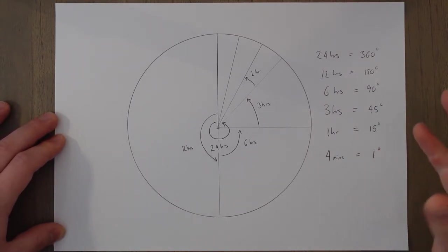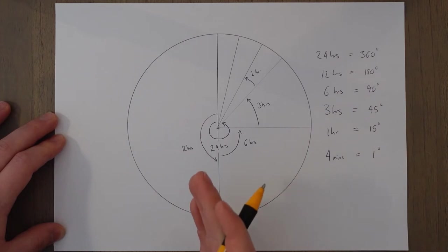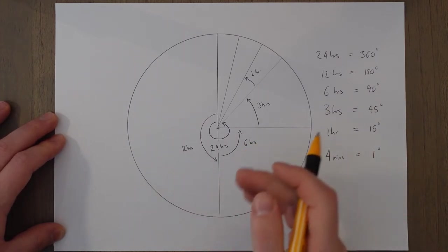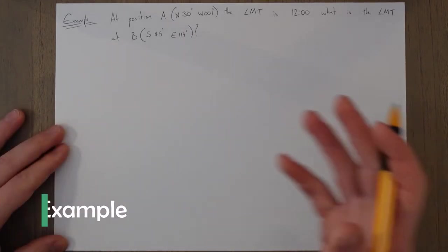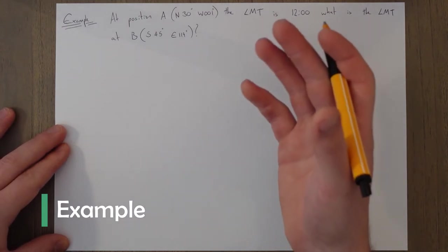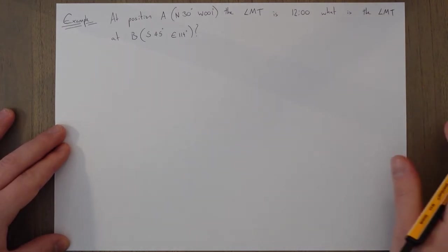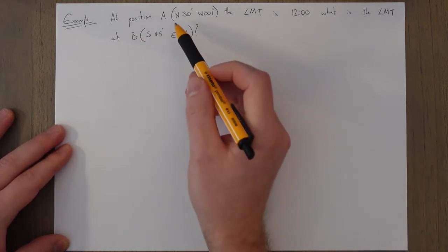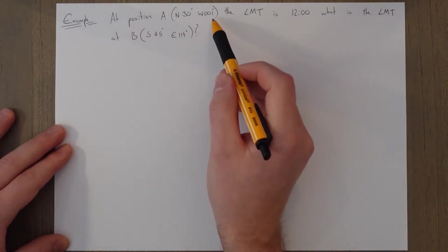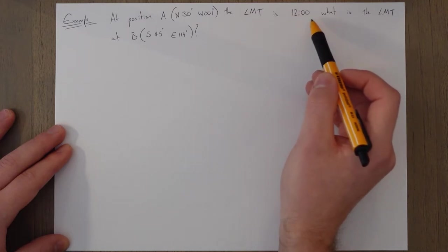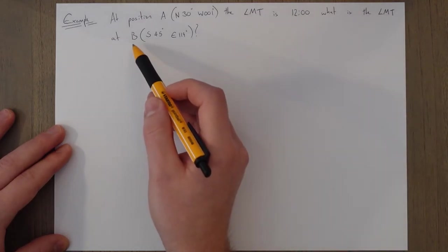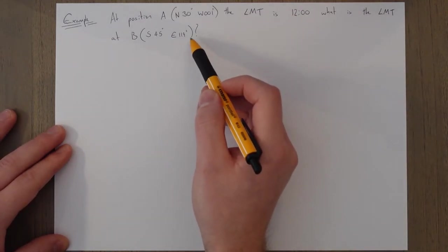You can therefore work out the time difference between two local meridian times if you know the change in longitude between them. So this is an example of how we would calculate those local meridian times. That would be the actual time at that meridian we're standing on. So at position A, which is north 30, west 001, the local meridian time is 12. What is the local meridian time at B, south 45, east 119 degrees?